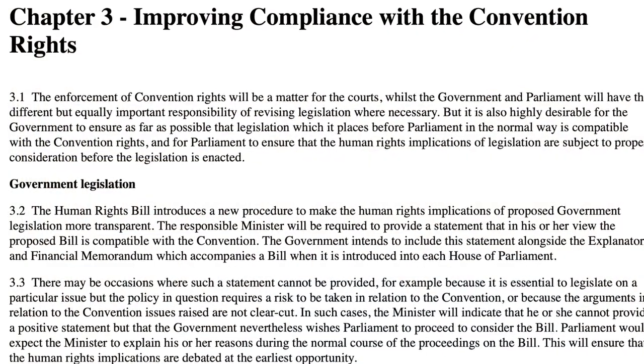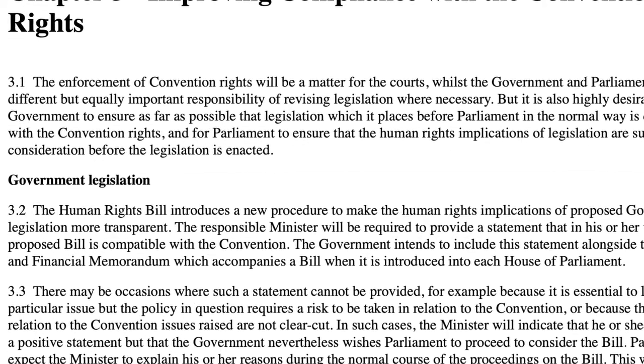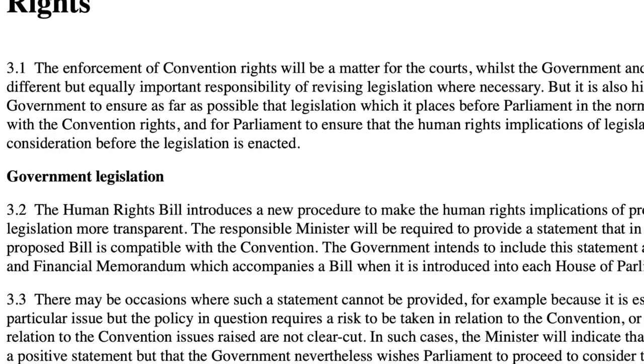Let us now consider the purpose of this section, as presented in the White Paper 'Rights Brought Home'. This was a document produced by the Labour government in 1997, setting out the government's thinking around what would become the Human Rights Act. As the White Paper put it, the purpose of the requirement was to make the human rights implications of proposed government legislation more transparent. In other words, it is not to prevent parliament legislating contrary to convention rights, or even to prevent the executive from proposing such legislation, but to make it absolutely clear if and when a government were to introduce incompatible legislation.